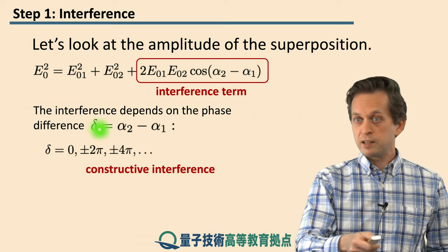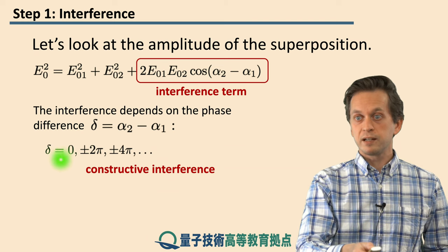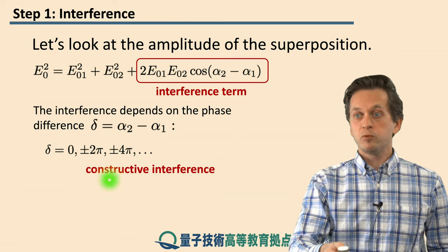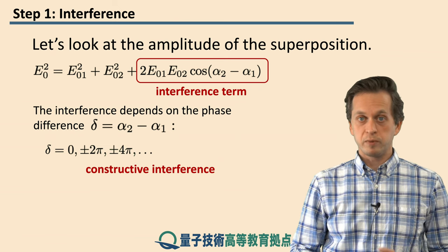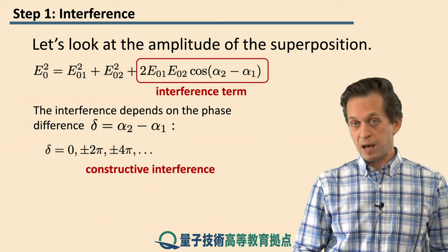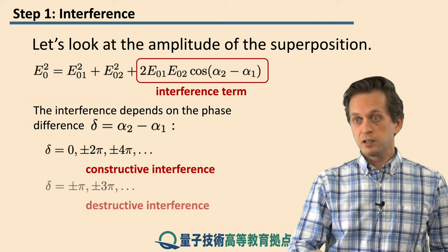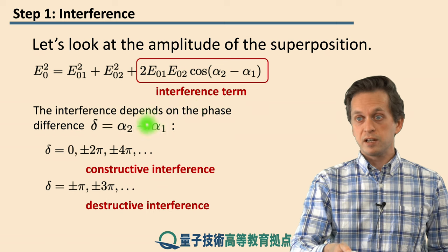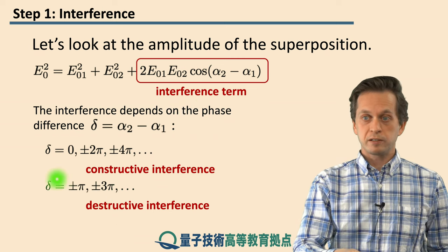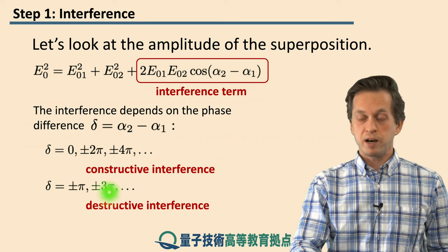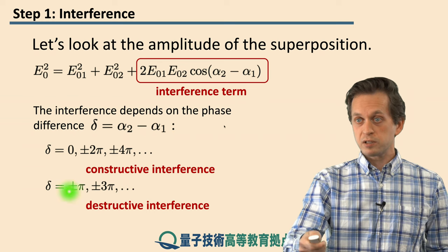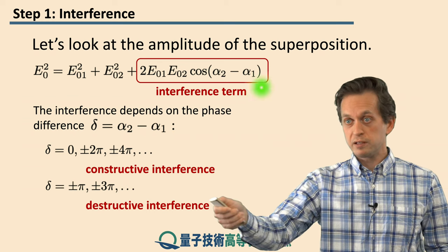So the entire expression for E₀ squared is maximized when delta is either zero or multiples of 2π. And we call this constructive interference because it's adding to the new resultant amplitude. On the other hand, if the phase difference is an integer multiple of π as plus or minus π or plus or minus 3π, then what we get is destructive interference because this interference term over here is minimized.